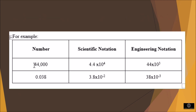Let us consider the number 44,000. In scientific notation, it is represented as 4.4 × 10⁴, where 4.4 is between 1 and 10 with one digit to the left of the decimal point. In engineering notation, the same number is represented as 44 × 10³, where the number has 1 to 3 digits to the left of the decimal point and the exponent is a multiple of 3.